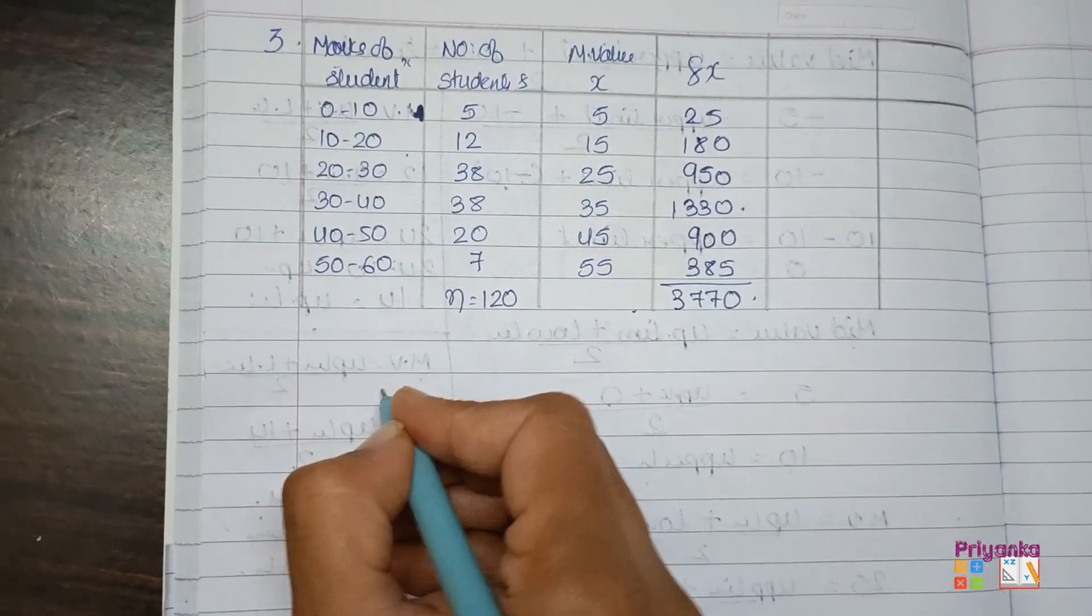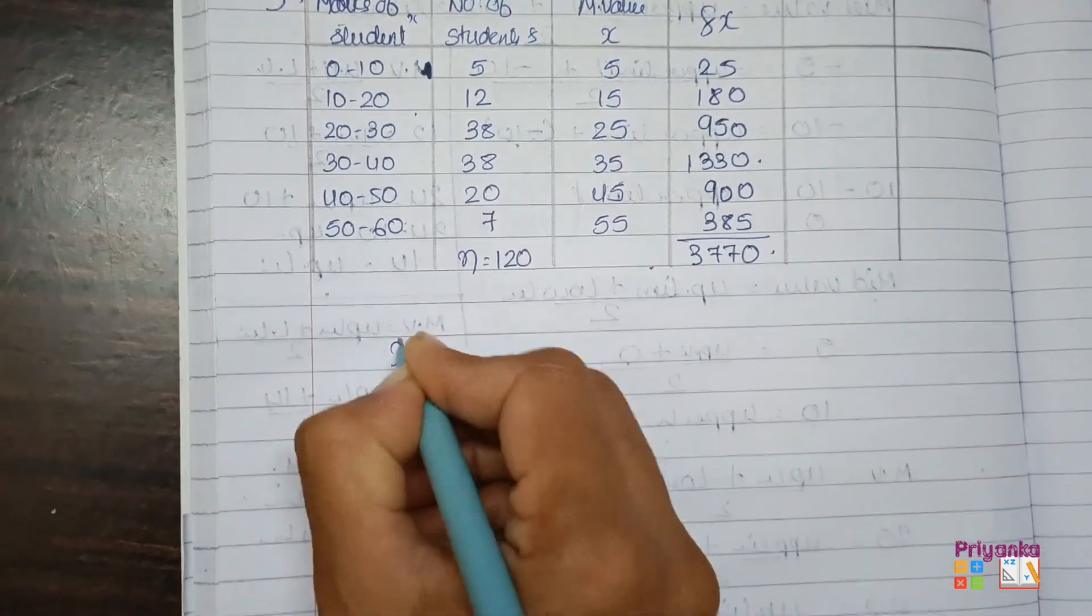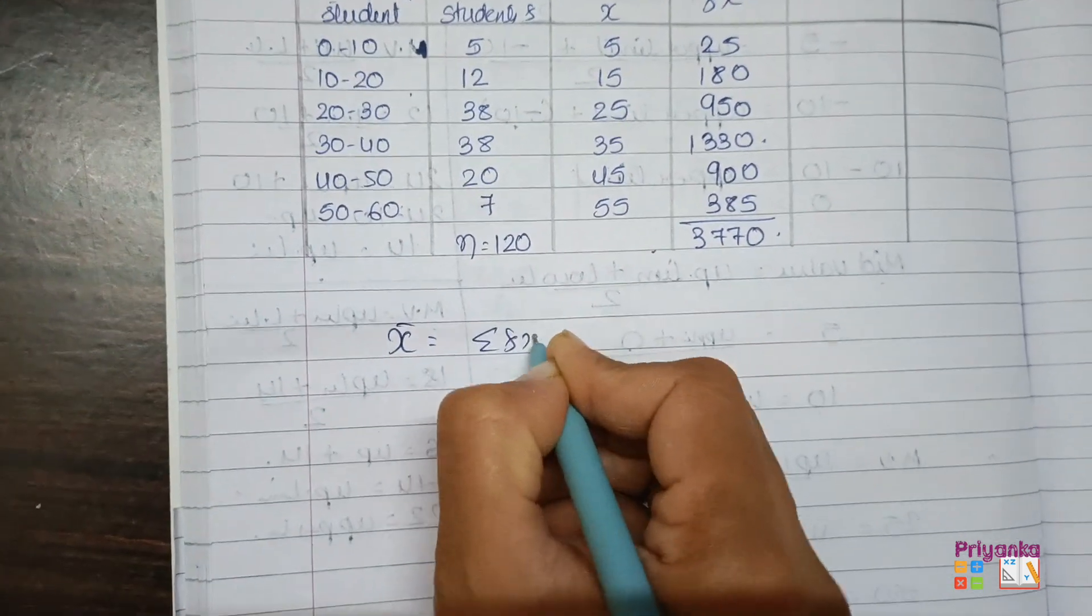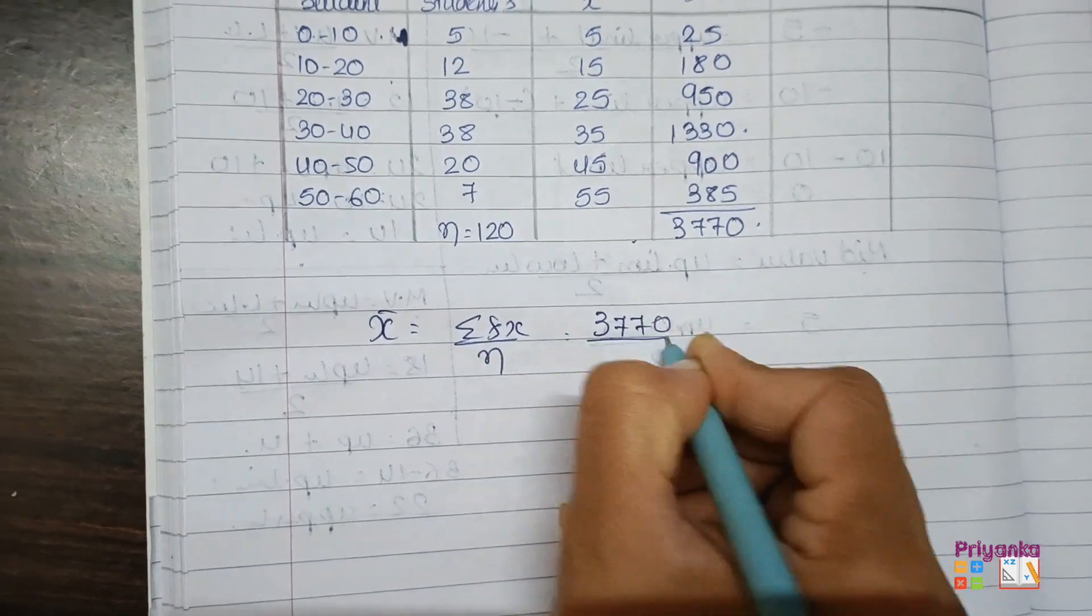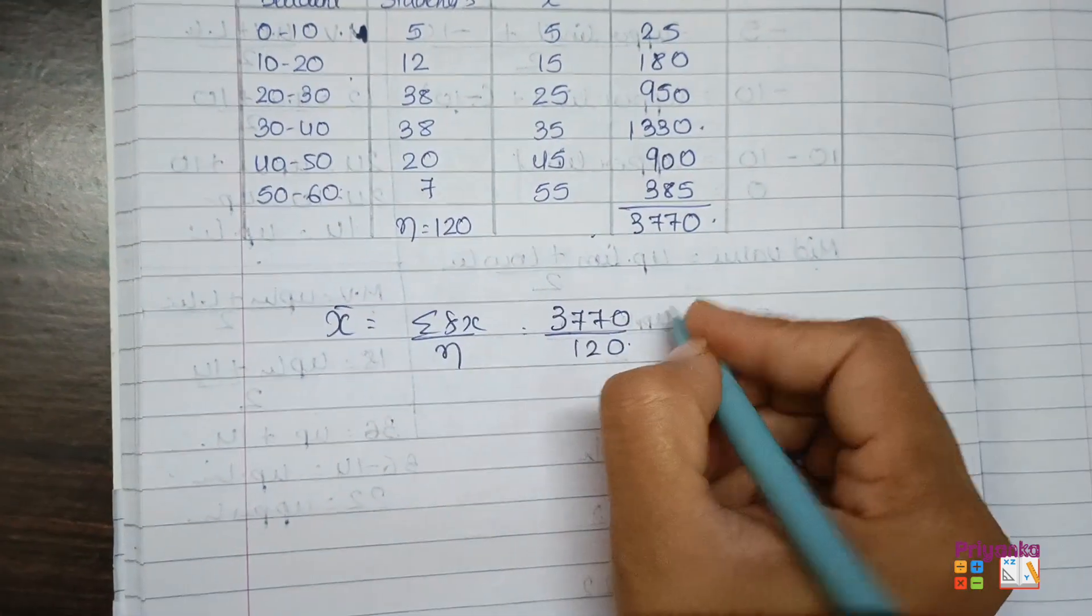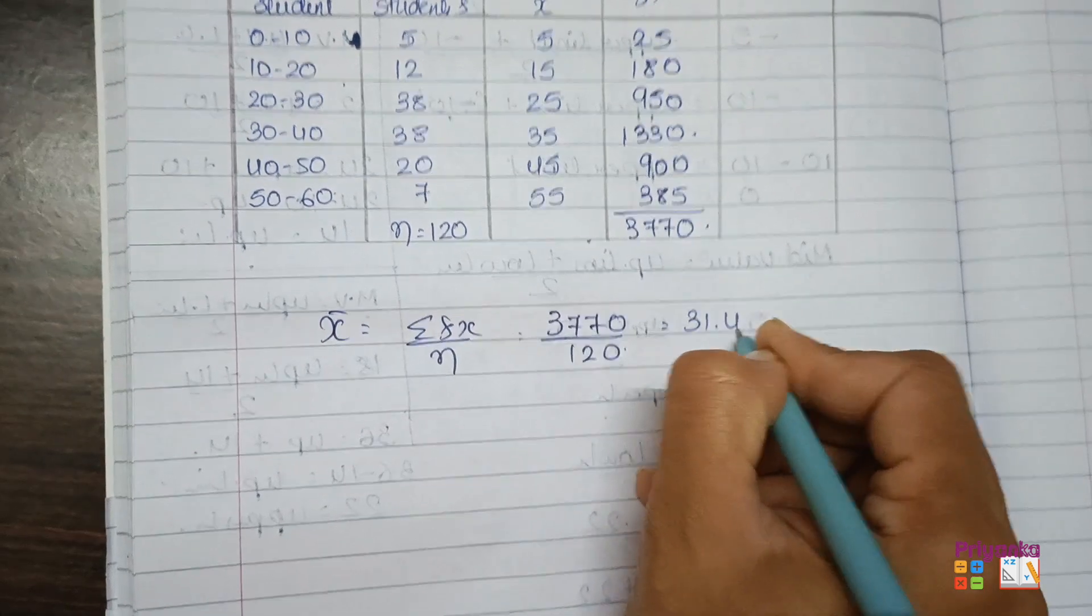And now we will find out first mean. That is sigma fx upon n and the value 3770 divided by 120. You will get 31.42.